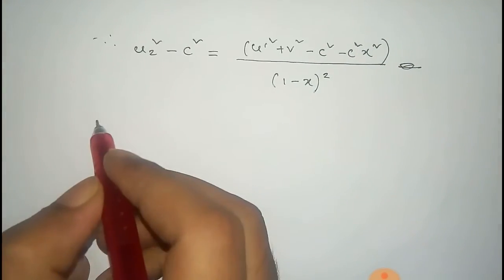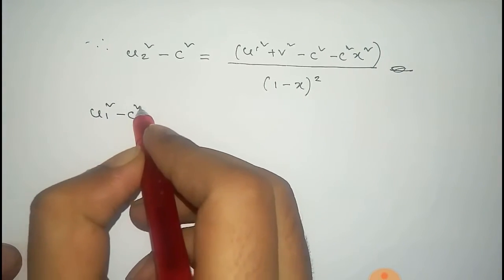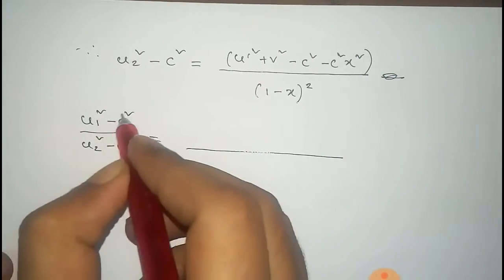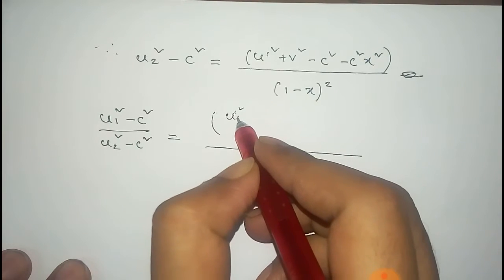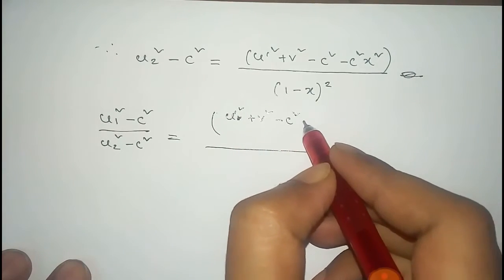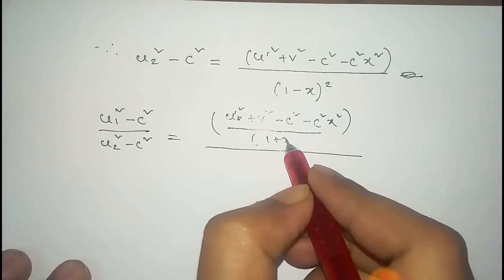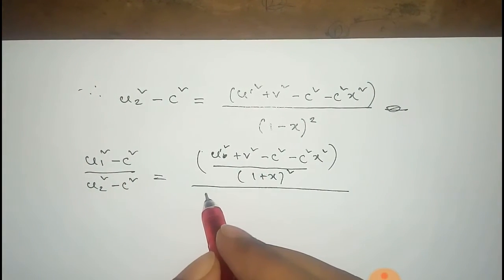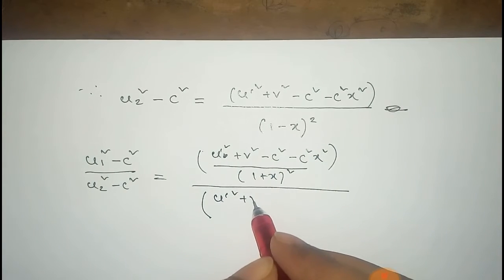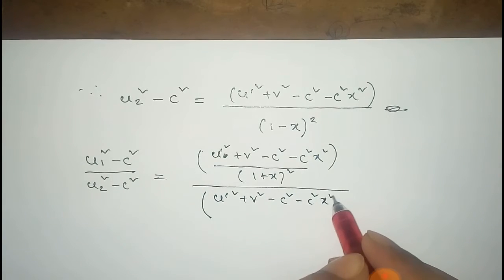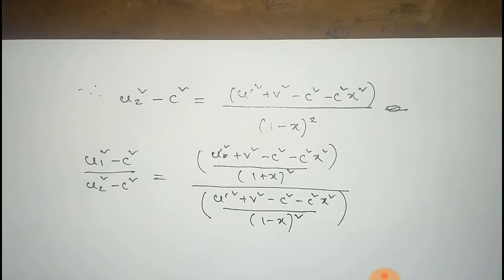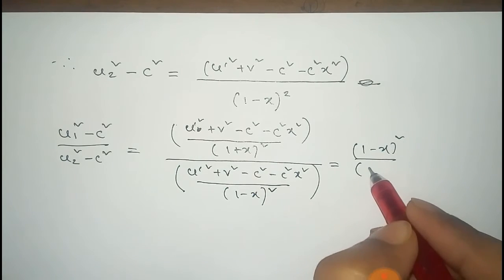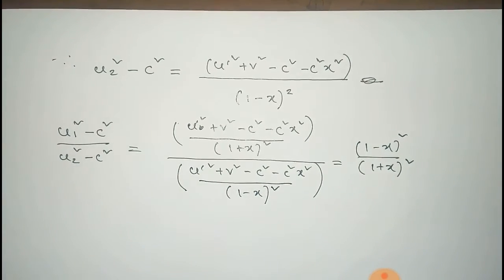Similarly, u2² minus c² equals (u prime² plus v² minus c² minus c²x²) / (1 minus x)². Dividing the expression for u1² minus c² by u2² minus c², the common numerator cancels, leaving (u1² minus c²) / (u2² minus c²) equals (1 minus x)² / (1 plus x)².